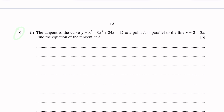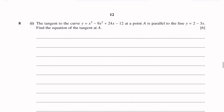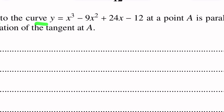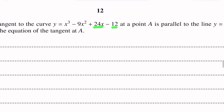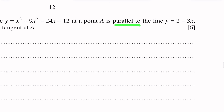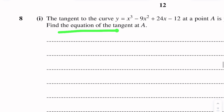Question number 8. This question is from differentiation. The first part: the tangent to the curve y equals x cubed minus 9x squared plus 24x minus 12 at point A is parallel to the line y equals 2 minus 3x. Find the equation of the tangent at A.